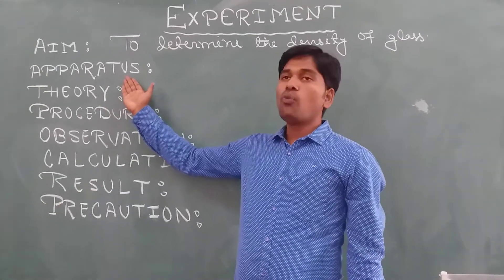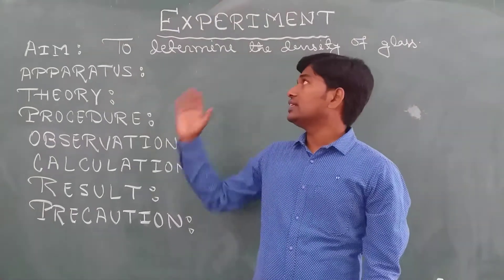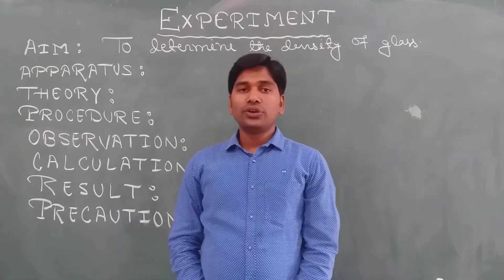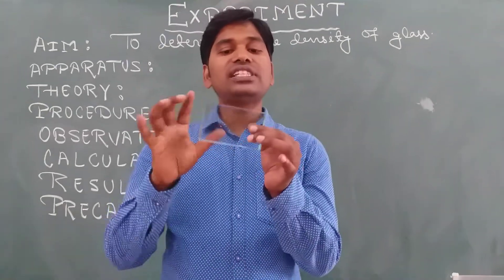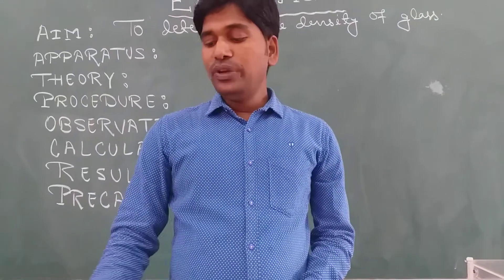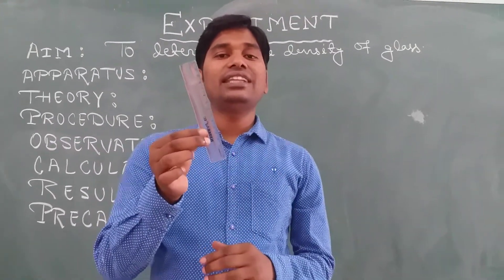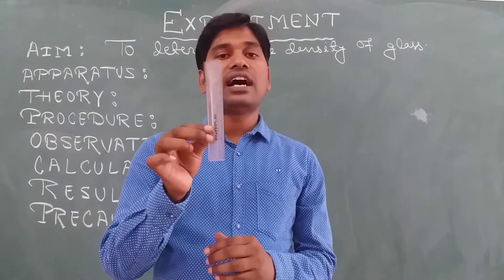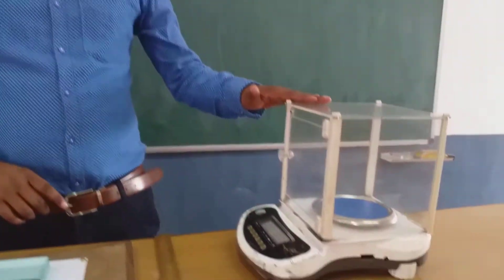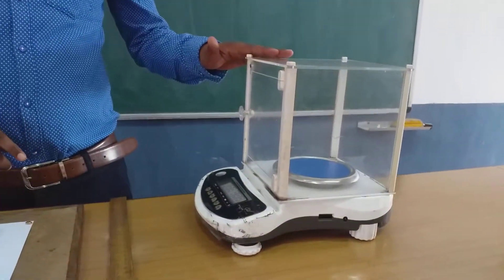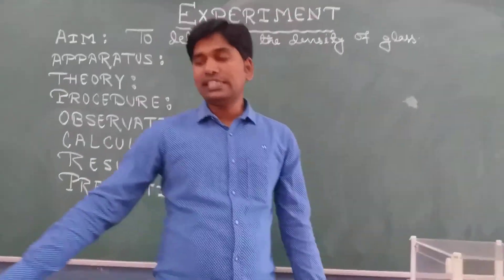Next we will see what apparatus is required. To find the density of a glass slab we require: a glass slab whose density we have to find, a scale to measure the length, breadth, and height of the glass slab, and an electronic balance to measure its mass.